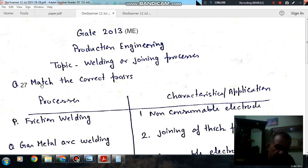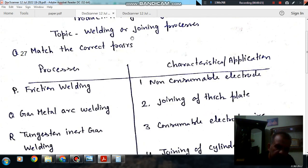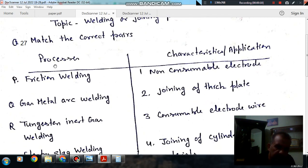Question number 27 from GATE 2013 ME is, match the correct pair processes, characteristics or applications.